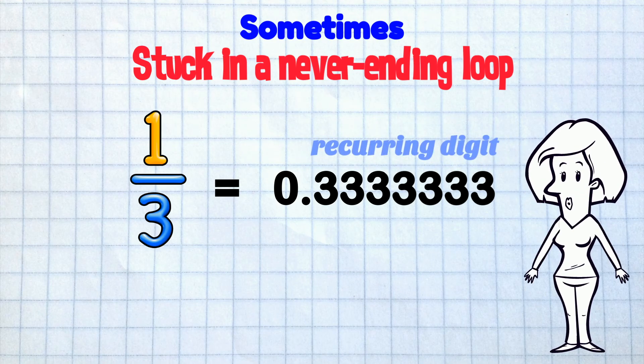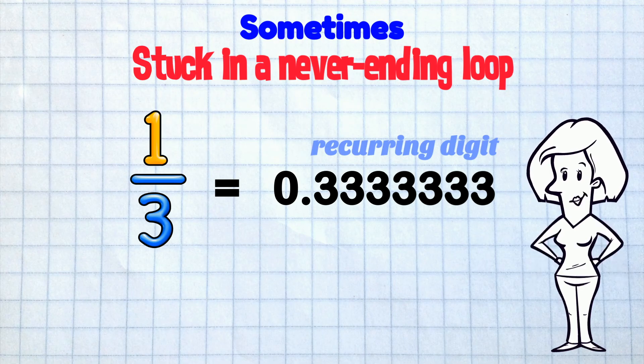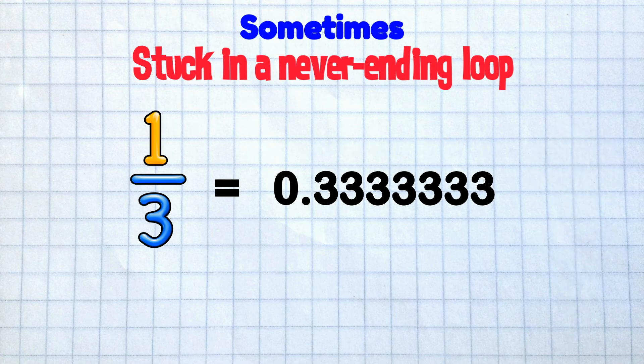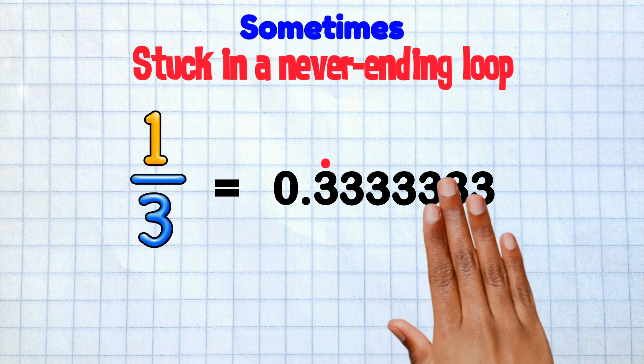But in our answer, we don't use this long string of 3's that just keeps on going. Instead, we use some cool math notation to show the recurring digit. We put a dot over the first 3 and leave all the others off!